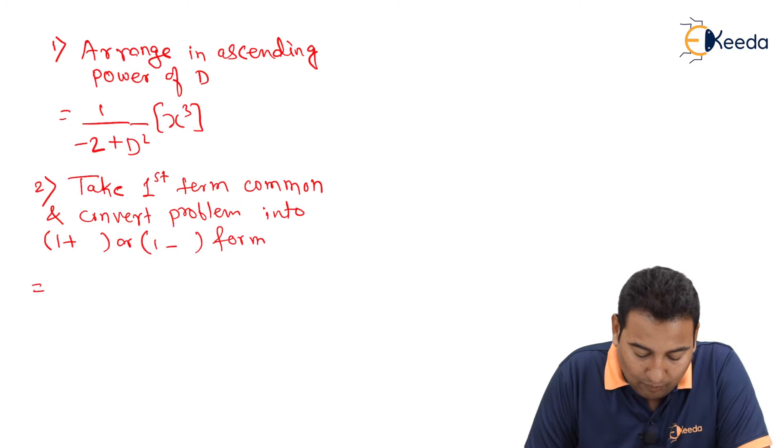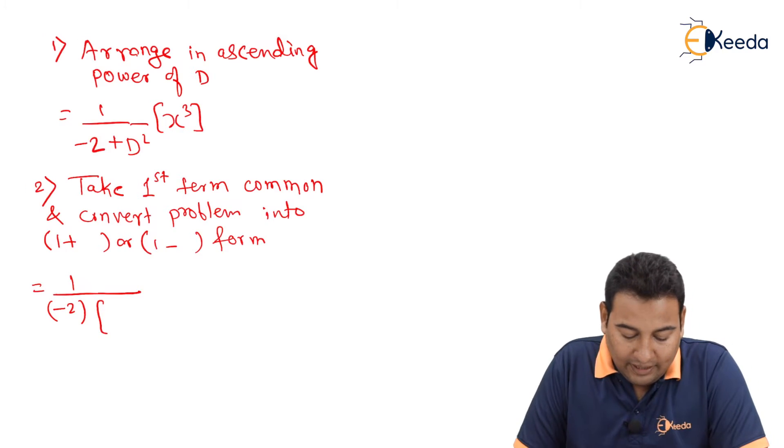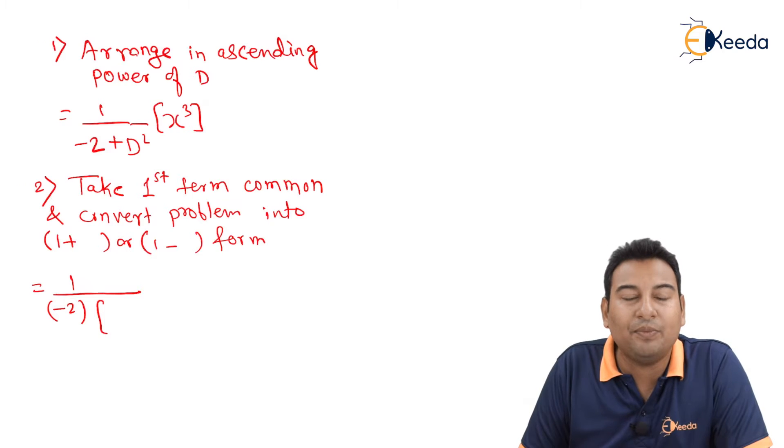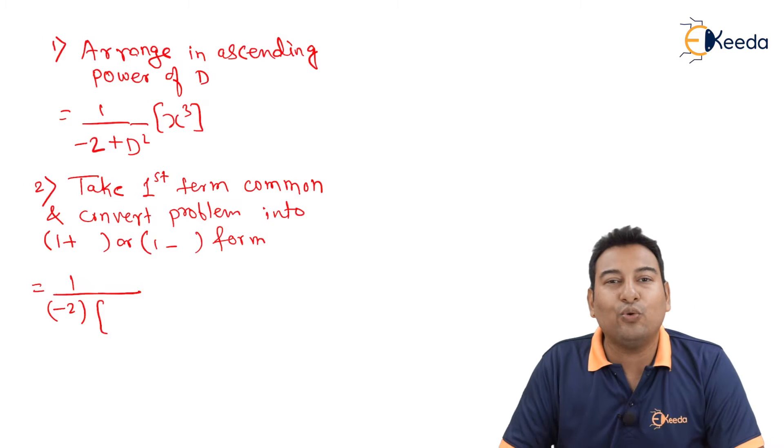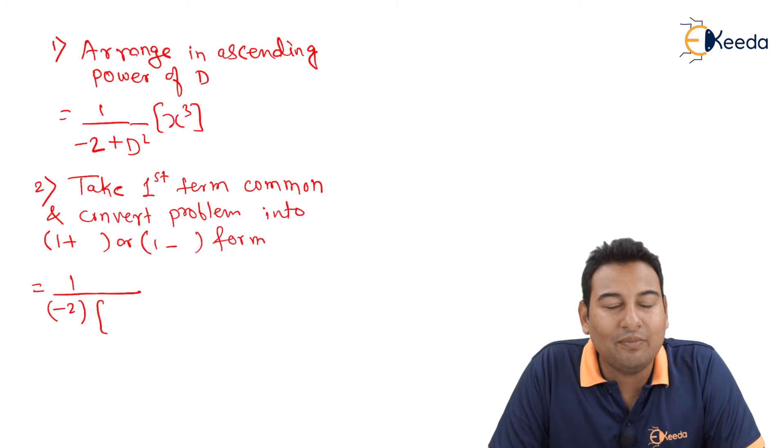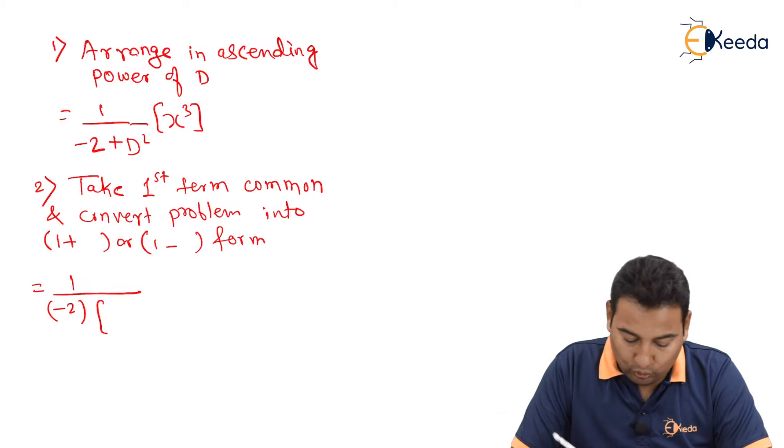If you take the first term common, that is 1 upon minus 2 inside, you will be left with, taking common means dividing. You are taking minus 2 common, that means you are dividing both the terms with the minus 2.